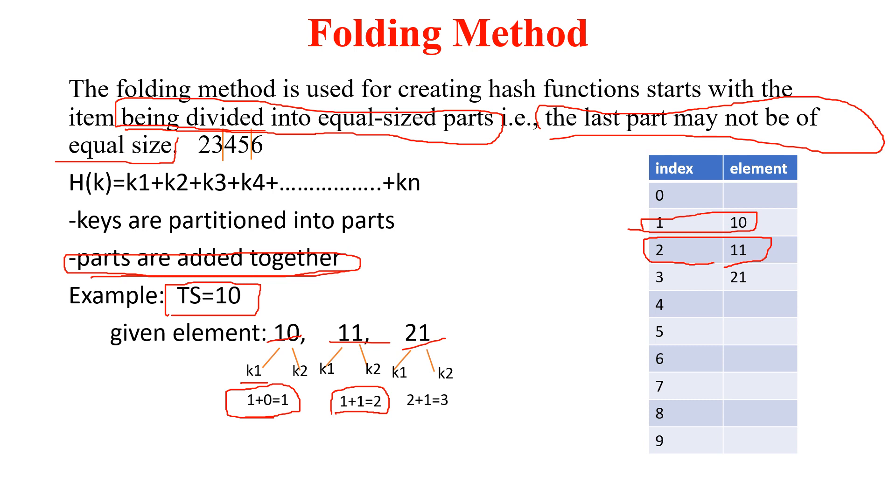Third one is 21. If we partition 21 into equal size parts, you will get K1 equals 2 and K2 equals 1. If we sum that, you will get 2 plus 1 equals 3. So 21 is going to store at the third index.